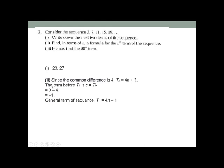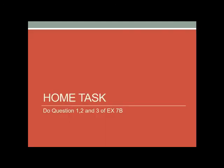As explained in question one, since the common difference is 4, the formula starts with tn = 4n. Find t0: the first term is 3, so 3 minus 4 = -1. The general term of the sequence is tn = 4n - 1. Now find the 50th term: t50 = 4 times 50 minus 1 = 200 minus 1 = 199. Your home task is to do questions 1, 2, and 3 of Exercise 7B.